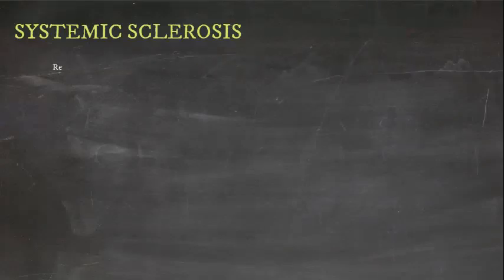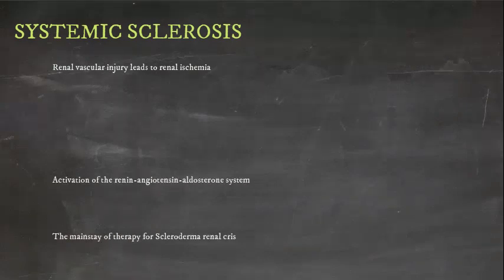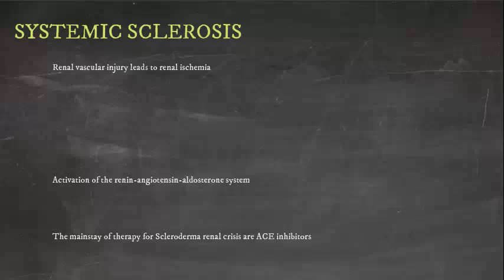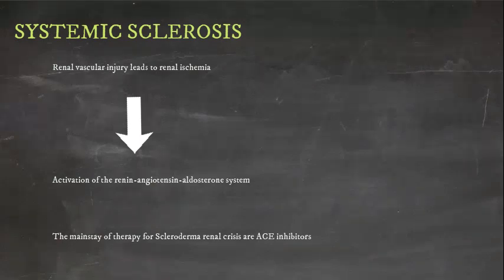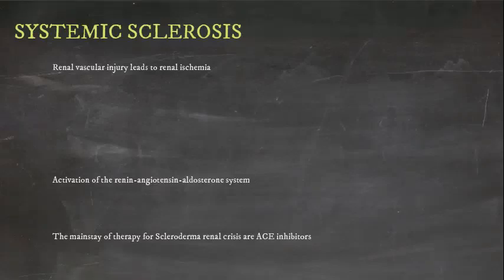Scleroderma renal crisis is a life-threatening complication of systemic sclerosis. Renal vascular injury leads to renal ischemia, which results in activation of the renin-angiotensin-aldosterone system. The mainstay of therapy for scleroderma renal crisis is ACE inhibitors, which reduce renin-angiotensin-aldosterone activity and improve renal function and blood pressure.